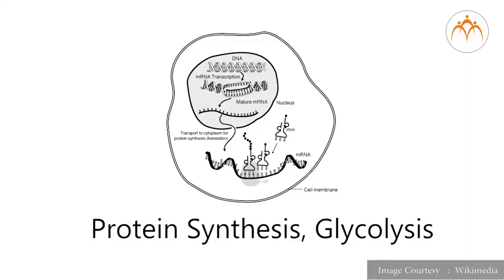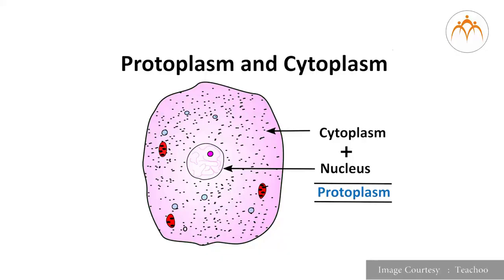Now we will see the functions of the cytoplasm. Cytoplasm functions to support and suspend organelles and cellular molecules. Many biochemical processes like protein synthesis, glycolysis, etc. occur in the cytoplasm. It helps to maintain the shape of the cell. Cytoplasm and nucleus inside the cell together are termed as protoplasm, and it is considered as the vital component of the cell.